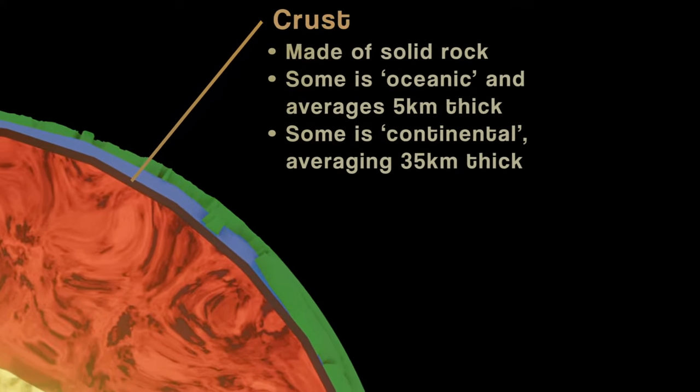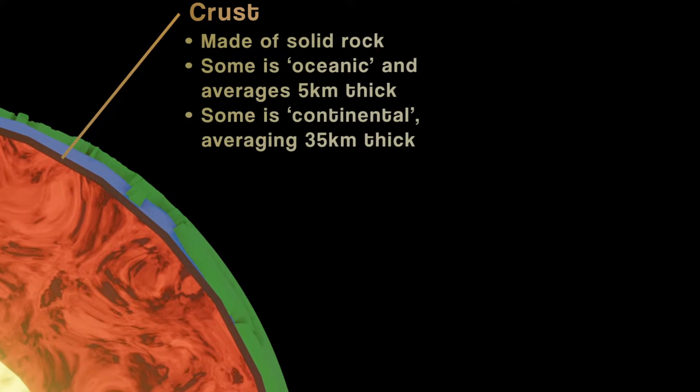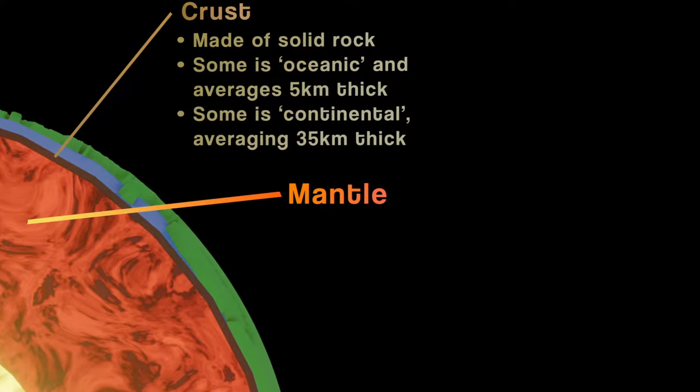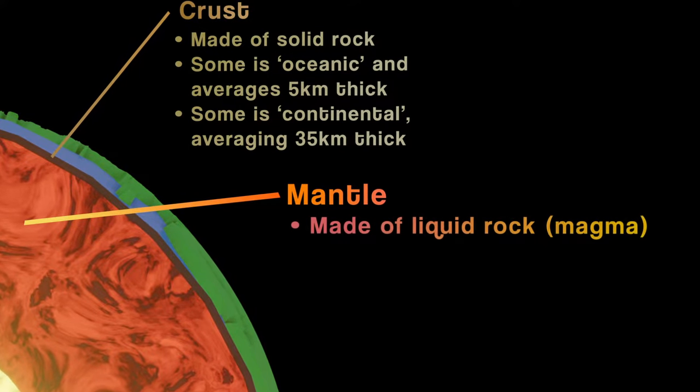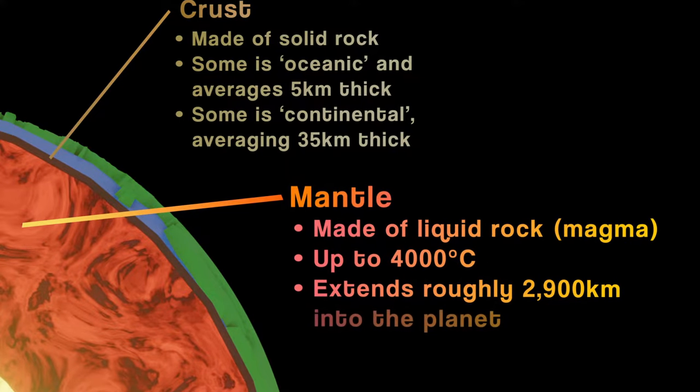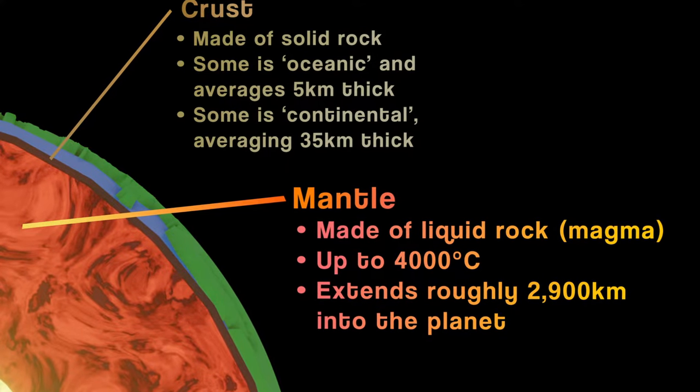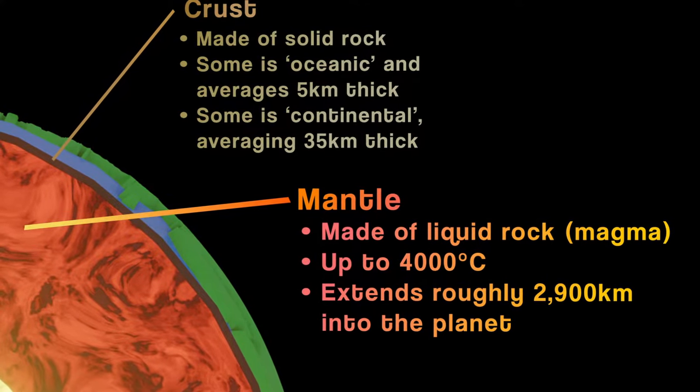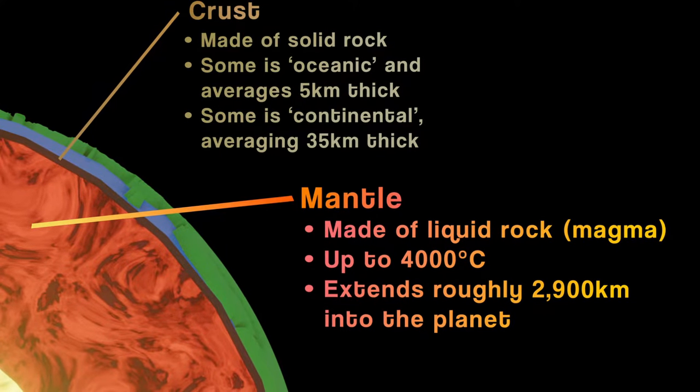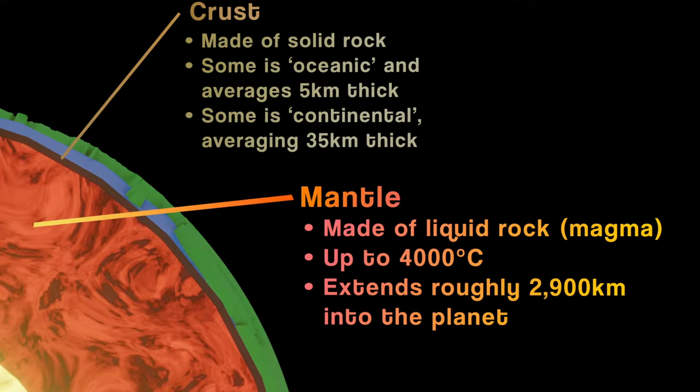Heading deeper into the planet, we come to the next layer, the mantle. Like the crust, this layer is made of rock, but because temperatures are now much hotter, we're talking 4,000 degrees Celsius, the rock is melted into liquid, which we call magma. The mantle is also the thickest layer of the planet, extending to a depth of around 2,900 kilometers. I told you the crust was thin.